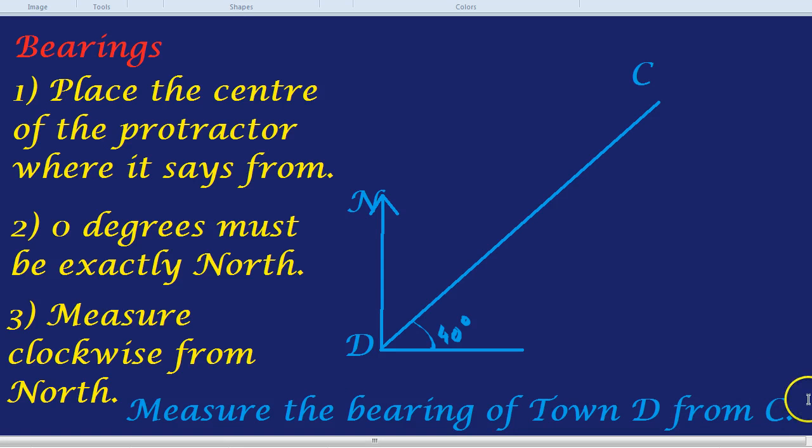From C means that we have to start at C. We almost have to imagine that there's a north line going up. So, it might help you to actually draw that north line if you're in the exam. That's our north line coming from C because all bearings have to be measured from north. So we might as well draw it.